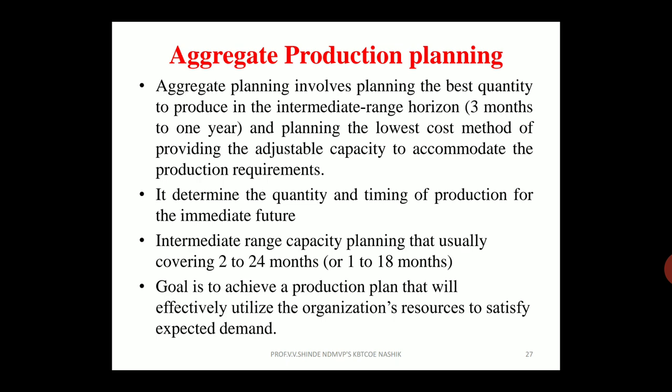We can also call it APP. In my previous video, I already explained what Production Planning and Control is. Today we will cover APP — Aggregate Production Planning. Aggregate Planning involves planning the best quantity to produce in the intermediate range horizon, that is 3 months to 1 year, and planning the lowest cost method of providing adjustable capacity to accommodate production requirements.